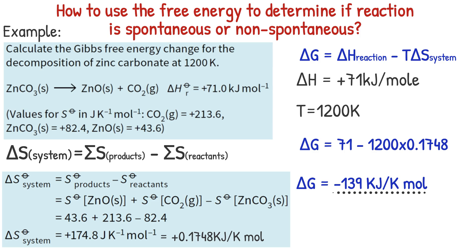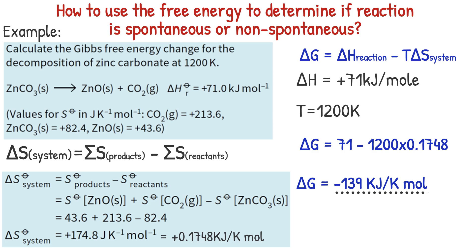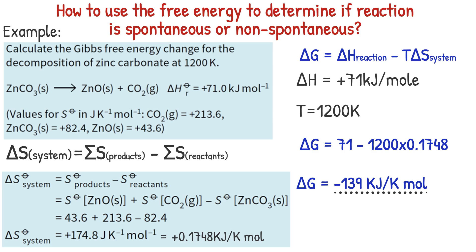As the value of free energy change is negative, this reaction is spontaneous at 1200 Kelvin. In the first example the temperature was 298 Kelvin, but in this second example the temperature is 1200 Kelvin. As a conclusion, the decomposition of zinc carbonate is non-spontaneous at low temperature, but spontaneous at high temperature.